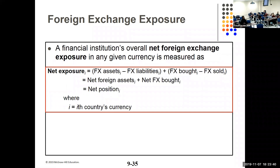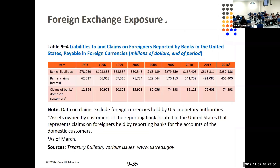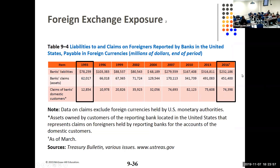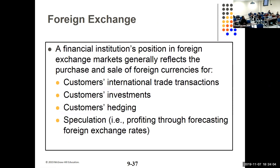Foreign exchange exposure is the net exposure: foreign exchange assets minus liabilities, plus bought minus sold — long or short. Looking at the data, from 1993 liabilities exceeded assets, but now assets far exceed liabilities. Financial intermediaries have positions in foreign exchange markets because they have customers doing international trade, customer investment, customers hedging, and they can speculate.